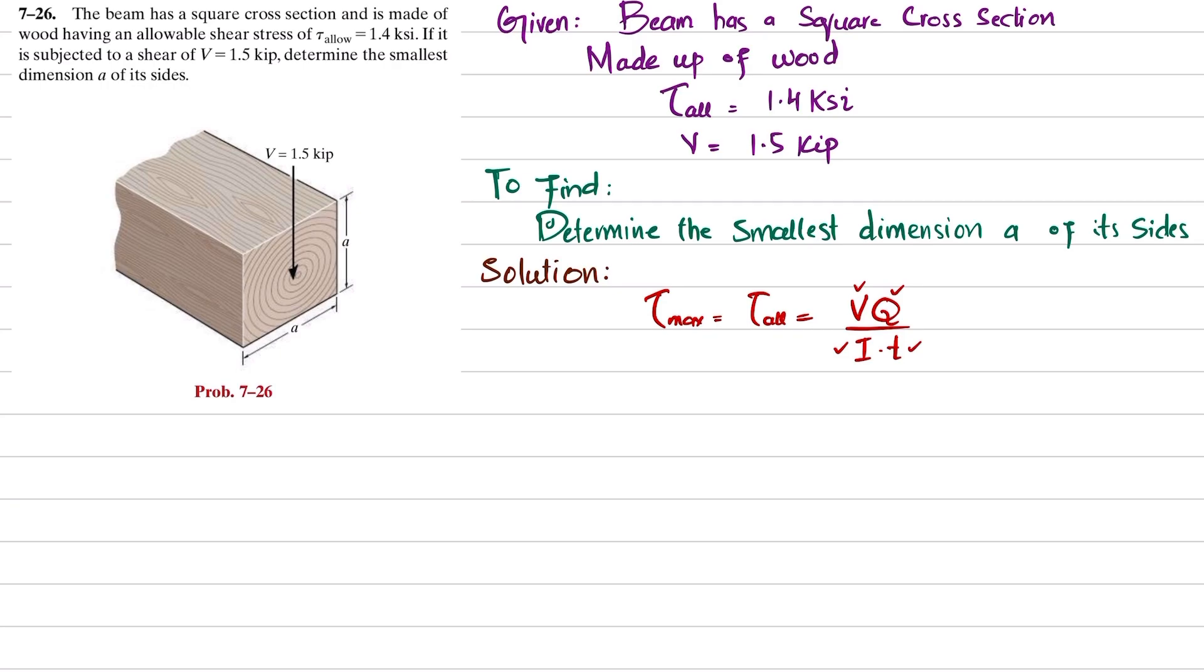So we will find first the section property I. I for a square cross section is equal to 1/12·b·h³. Here b is equal to a and h is equal to a, so it will be equal to 1/12·a·a³. So I will be equal to 1/12·a⁴. This is I.